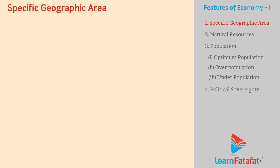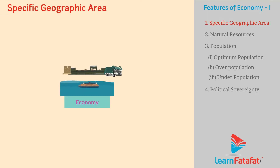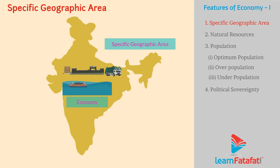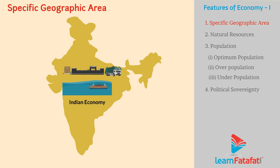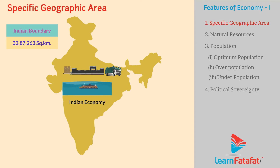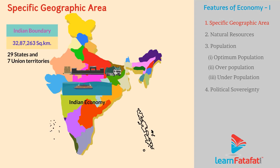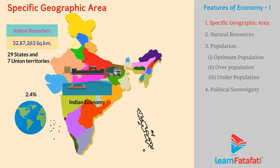Specific Geographic Area. Every economy is confined to a specific geographic area. For example, the Indian economy is confined inside the Indian boundary. It is present in 32,87,263 square kilometers of land, in which there are 29 states and 7 union territories of India. Percentage-wise, it covers about 2.4% of the land area of Earth.